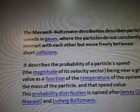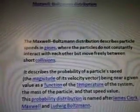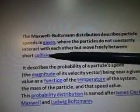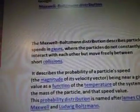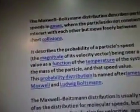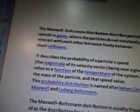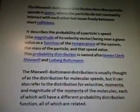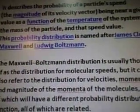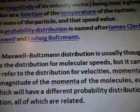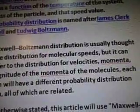The particles do not constantly interact with each other but move freely between short collisions — which is good because I'm talking about building a speed of neutrinos in a gas. Supposedly they do something when you have a pulse of laser beam energy and create a collision. It describes the probability of a particle's speed — the magnitude of its velocity vector being near a given value as a function of the temperature of the system, the mass of the particle, and the speed value. This probability distribution is named after James Clerk Maxwell and Ludwig Boltzmann.